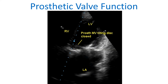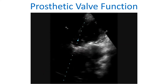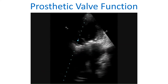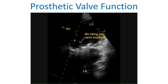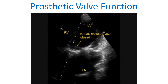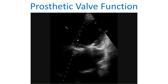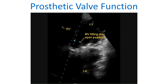Prosthetic mitral valve with tilting disc in closed position, seen in a modified apical 4-chamber view. Video clipping of the prosthetic mitral valve from the apical 4-chamber view shows opening and closing of the tilting disc prosthetic mitral valve. Still images showing open and closed positions are also shown.